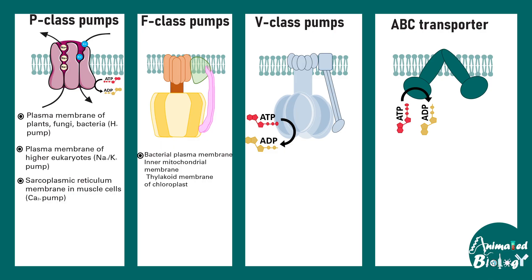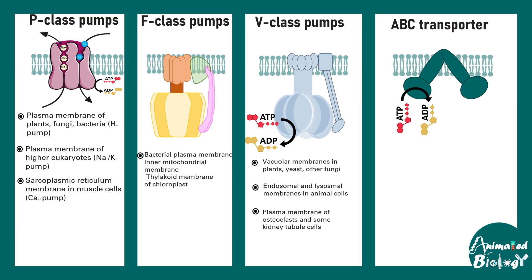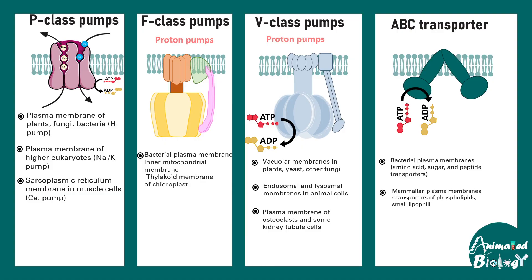F class pumps are a bit different from the other three. V class pumps are present in vacuoles, lysosomes, and endosomes; they help in transport of protons inside and aid in acidification. ABC transporters are really important — present in bacterial plasma membranes, they help in taking up nutrients such as amino acids, sugars, or peptides. They are also present in mammalian plasma membranes and can transport phospholipids, small lipophilic drugs, and cholesterol. ABC transporters are highly studied in the context of multi-drug resistance because many encode efflux pumps that expel antibiotics and other drugs from the cell.